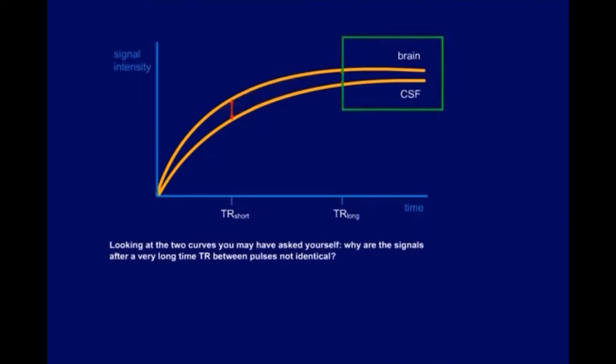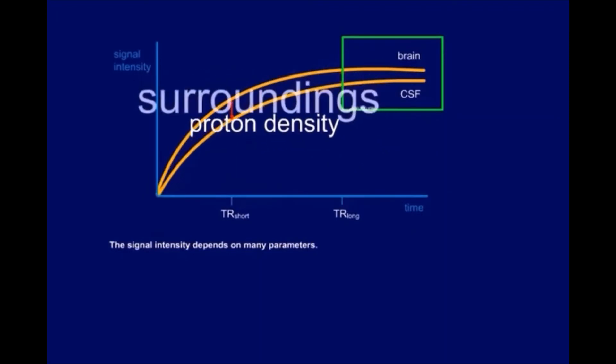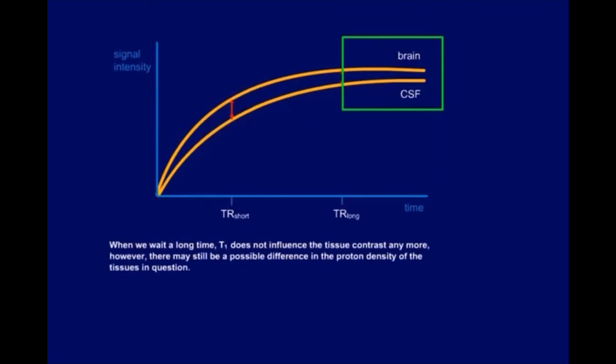Looking at the two curves, you may have asked yourself why are the signals after a very long time TR between pulses not identical. We have heard the explanation already. The signal intensity depends on many parameters.